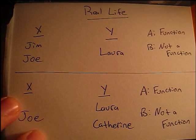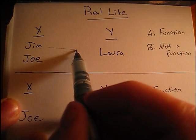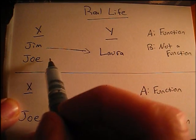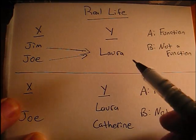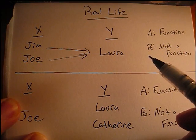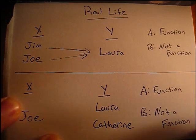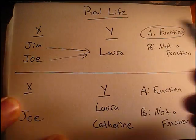Let's pretend that the pairing from x to y is asking someone out on a date. It would be acceptable for Jim and Joe to both ask out Laura on a date. That we would consider that pairing an acceptable answer, and Laura would then have to choose who she would want to go out on a date with. So this pairing would be a function.